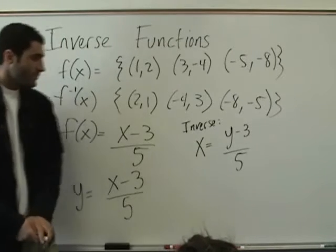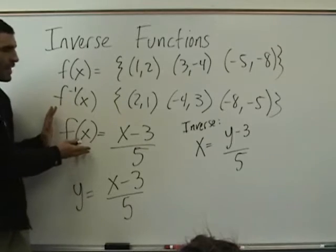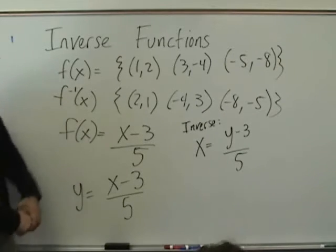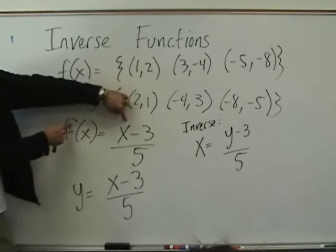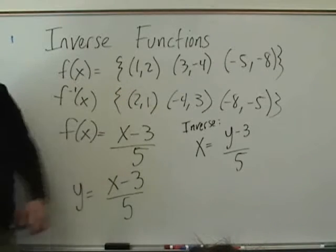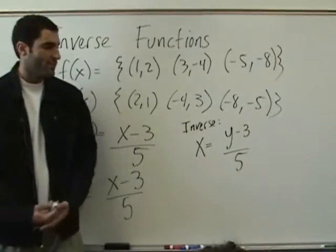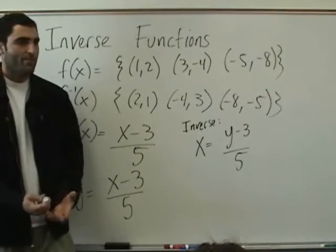Do you have to have the middle step? Well, we know that f of x equals y, so we just need to write it as y to help us out. But, technically, no. You can just write this as x equals y minus 3. You can go from here to here. Okay, but, however, for it to be a function, we need to solve for y. That's the last step.